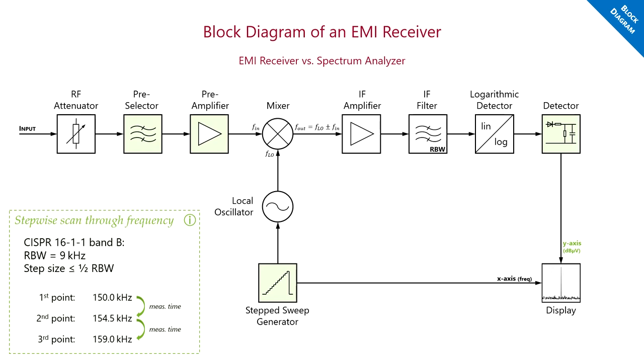As an example, let us consider that we want to start our measurement at 150 kHz. Here, the correct resolution bandwidth, according to the requirements defined in the standard, must be chosen with 9 kHz. The step size is usually half the resolution bandwidth, but some standards may ask for even narrower steps.